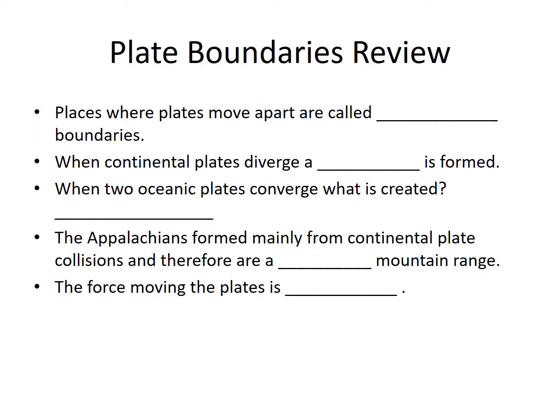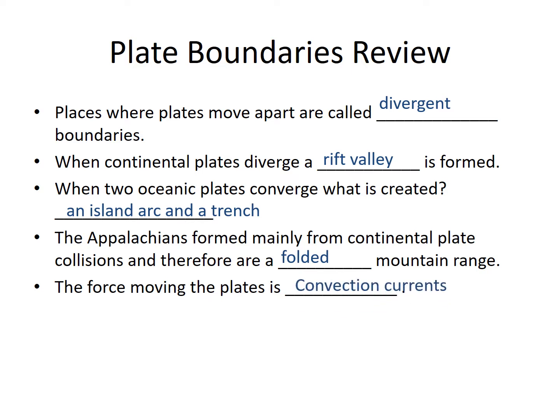Let's go ahead and review. Take a minute to pause this video and see if you can answer these questions. Places where plates move apart are called divergent boundaries. When continental plates diverge, a rift valley is formed. When two oceanic plates converge, an island arc and a trench are created. The Appalachians formed mainly from continental plate collisions and therefore are a folded mountain range. The force moving the plates is convection currents, and we'll talk more about that in our next video.